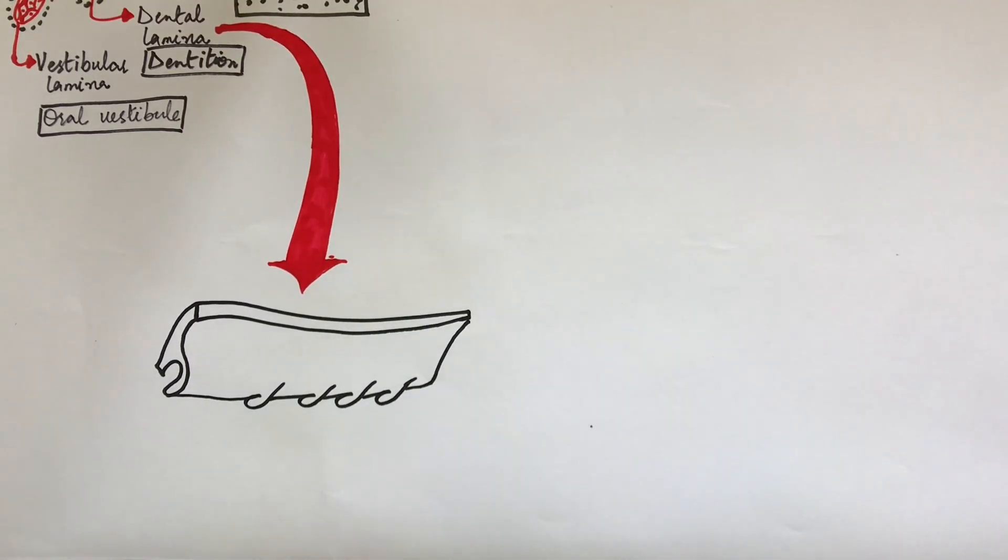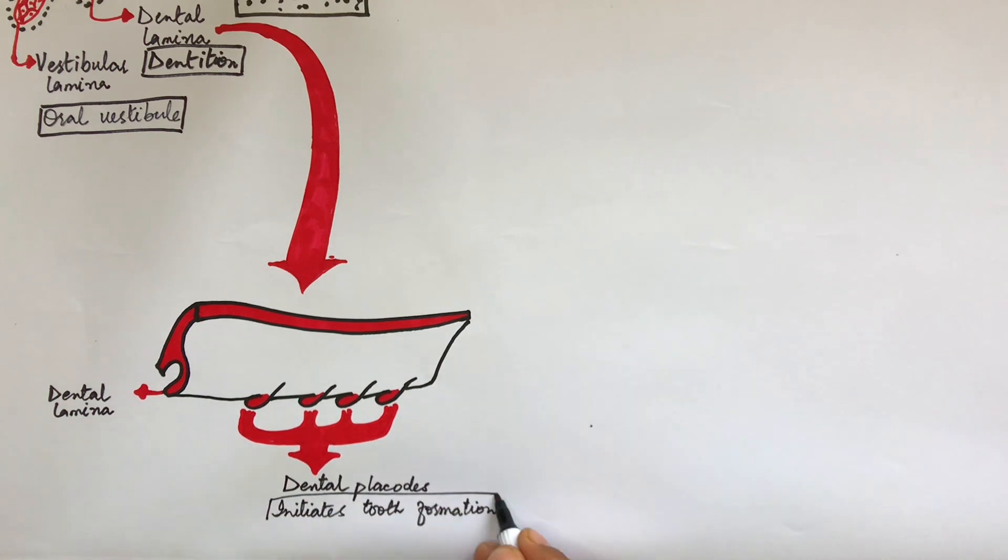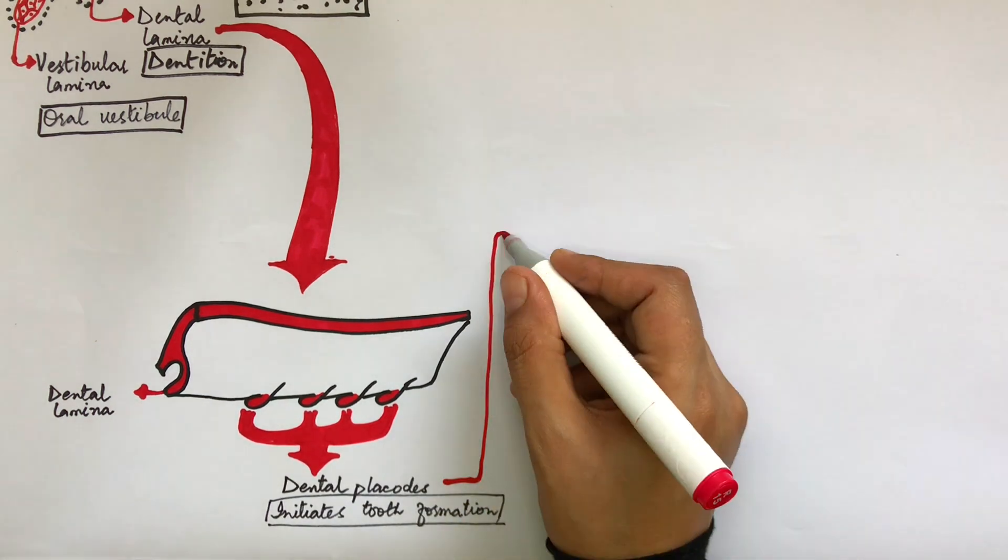Within just a few days, localized epithelial thickenings will become apparent on the dental lamina. These localized epithelial thickenings are now called the dental placodes, and dental placodes play the main role in the initiation of tooth formation.